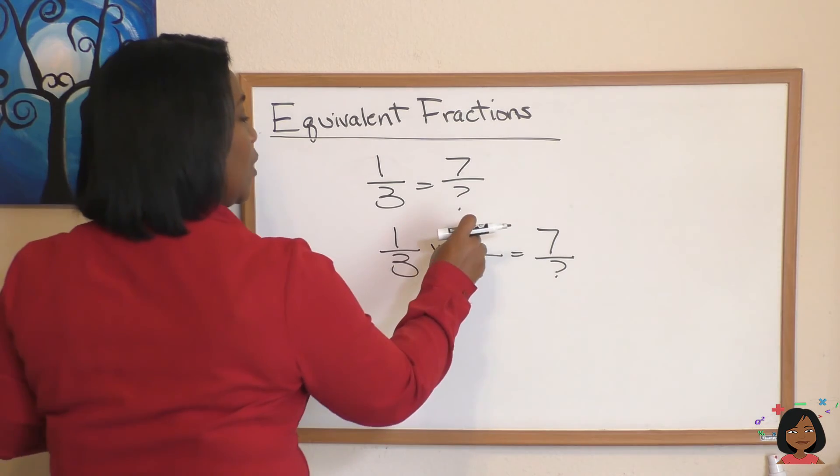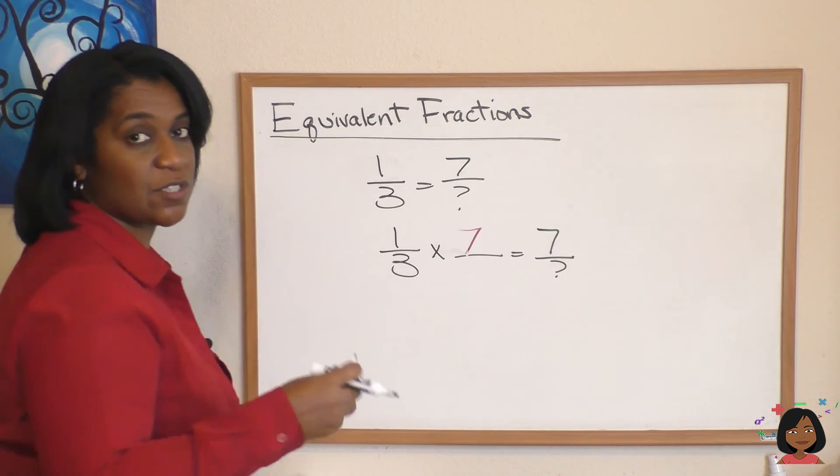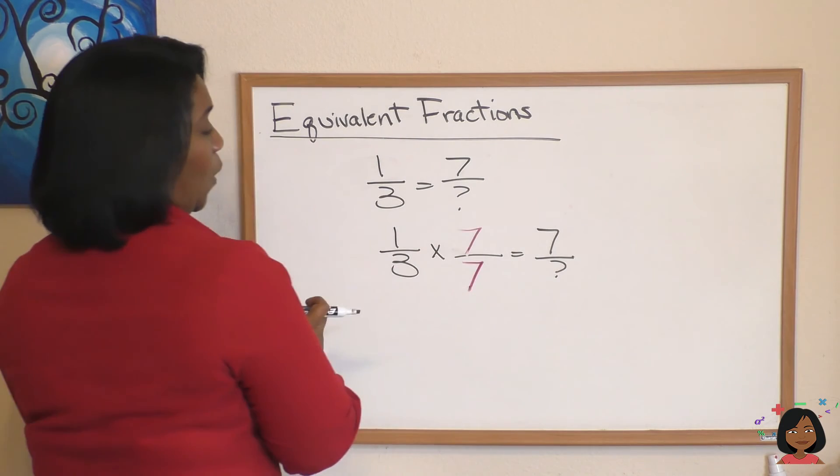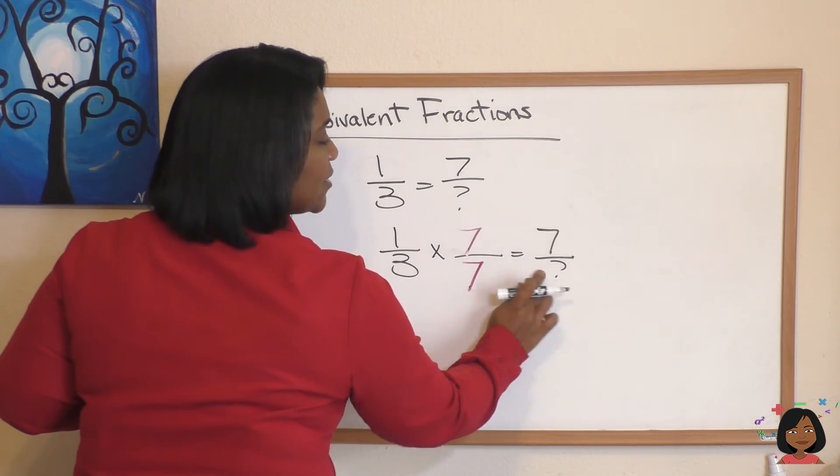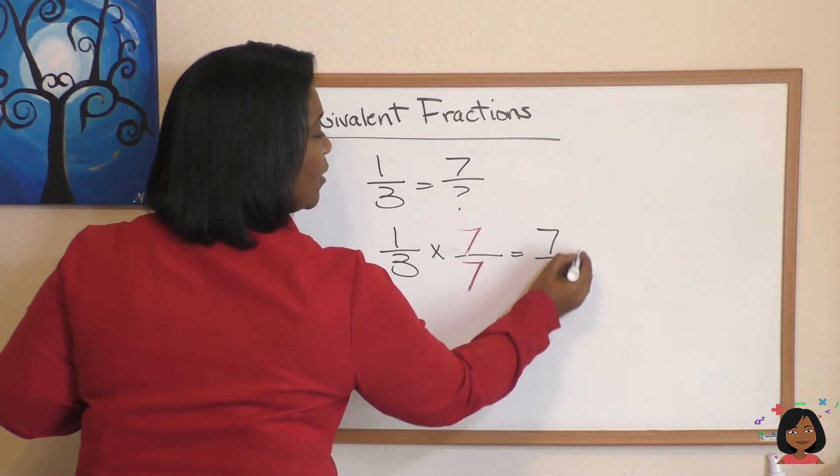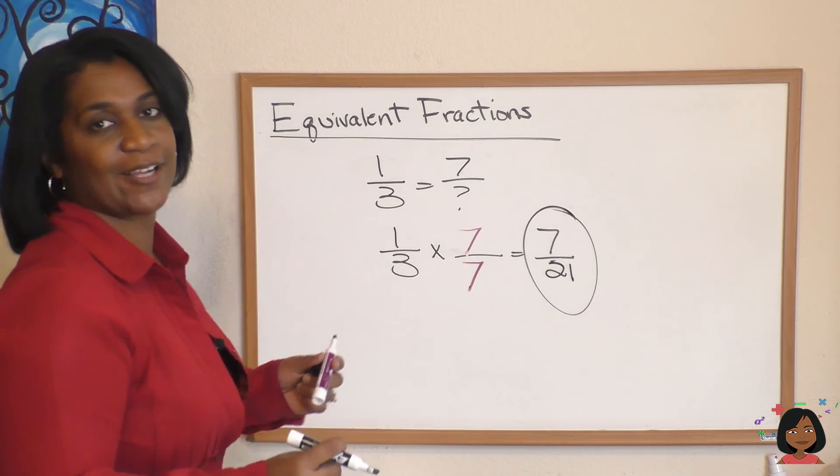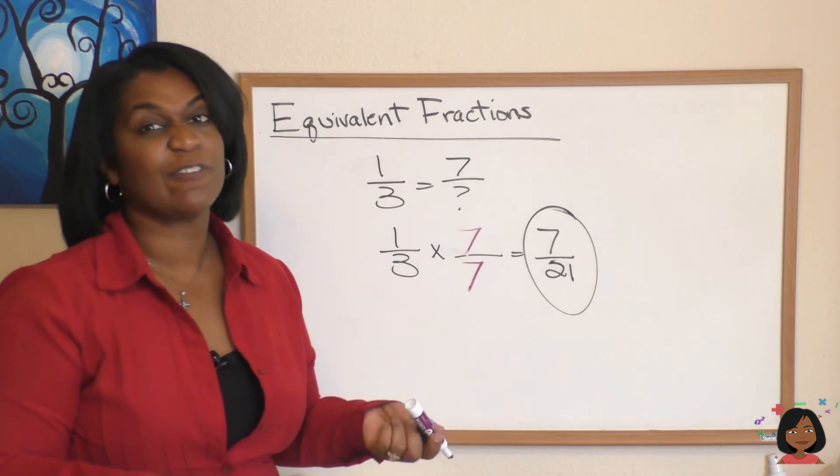And what you do to the top, you must do to the bottom. That's right. So three times seven is now going to be 21. That's your equivalent fraction. So again, the key to equivalent fractions: you can go either direction, you just got to multiply the top times the bottom.